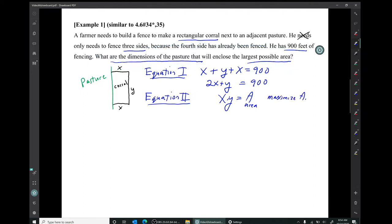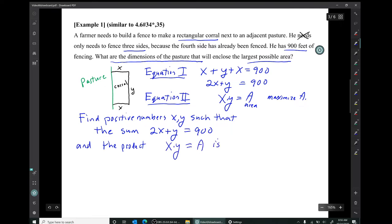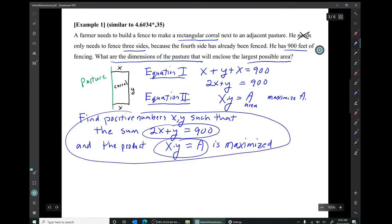So now we're ready to state an abstract math problem. Find positive numbers x and y, such that this particular sum has the value 900, and their product is maximized. Well, realize that's the abstract math problem that was solved in the previous video in example one.